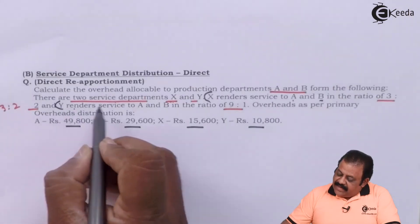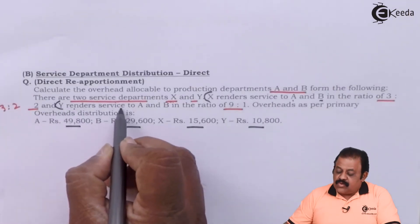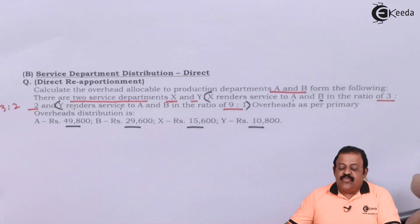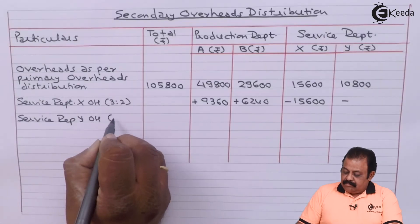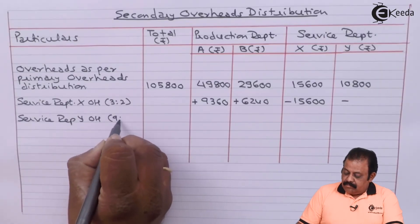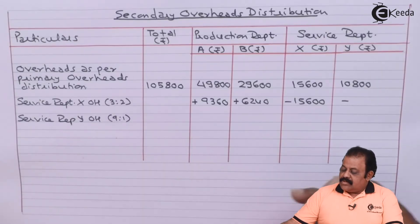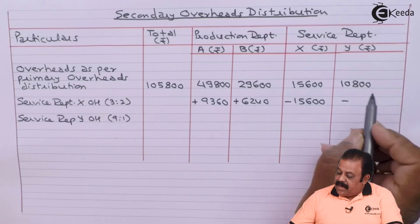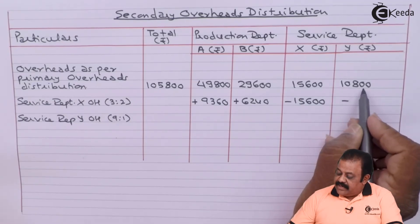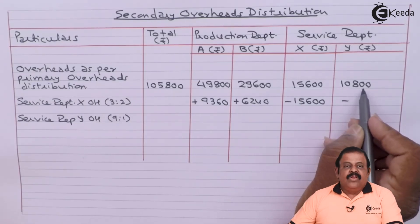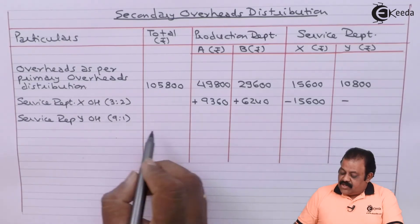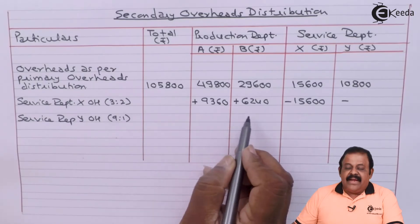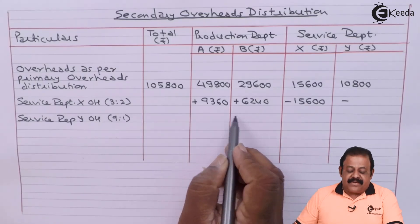Y renders service to A and B departments in the ratio of 9 to 1. So, the amount of overheads of Department Y — 10,800 — will be divided in the ratio of 9 to 1 between Department A and B.